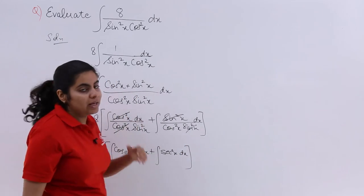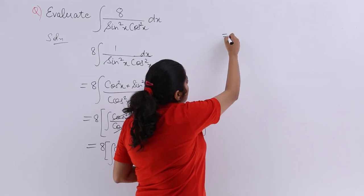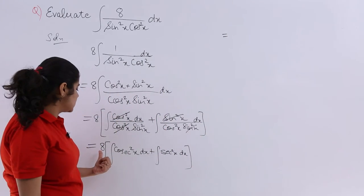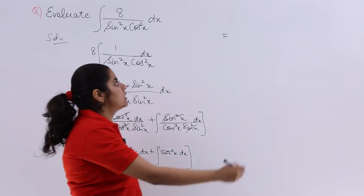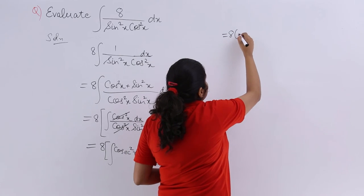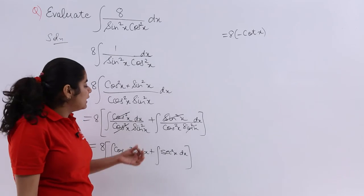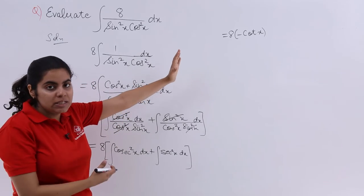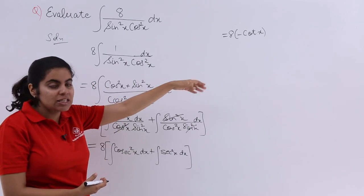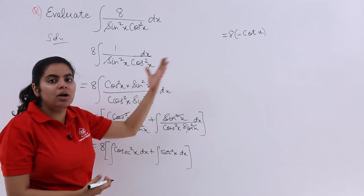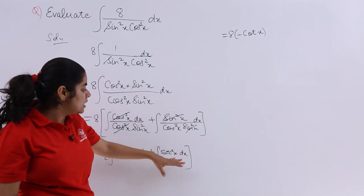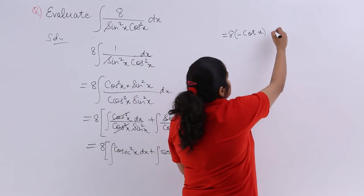For the next steps, I would like to move to the second column of the board. I have 8 over here that does not change. Integration of cosecant square x I have to see. It becomes minus cotx, right? Because we see that the integration of cosecant square x has to be minus cotx, or the differentiation of minus cotx would be cosecant square x. Secant square x integration is tan x.